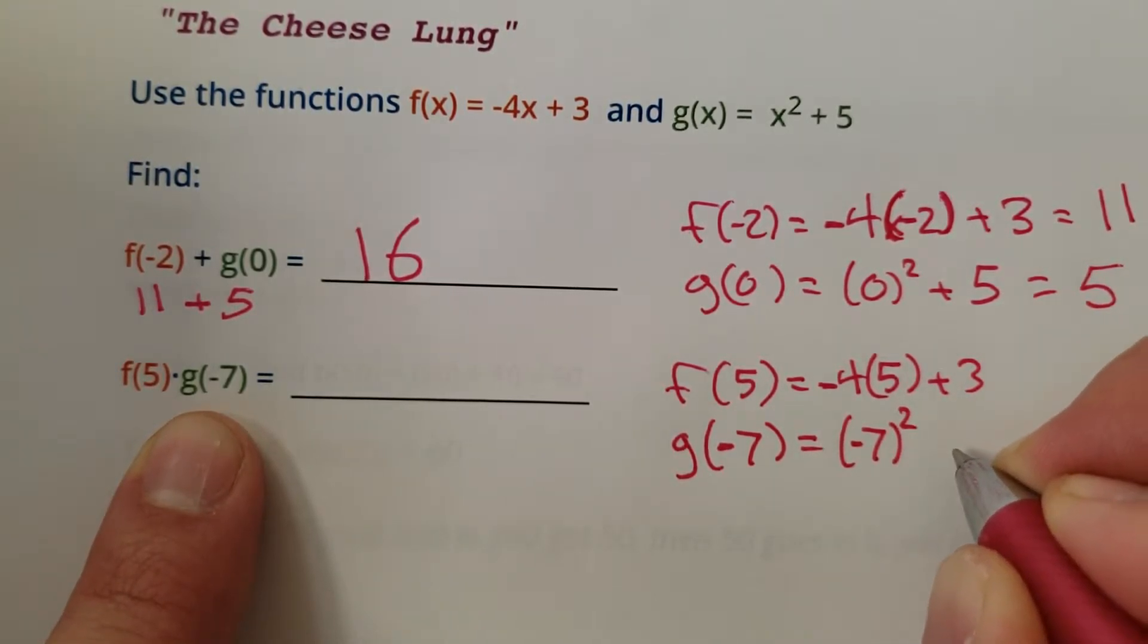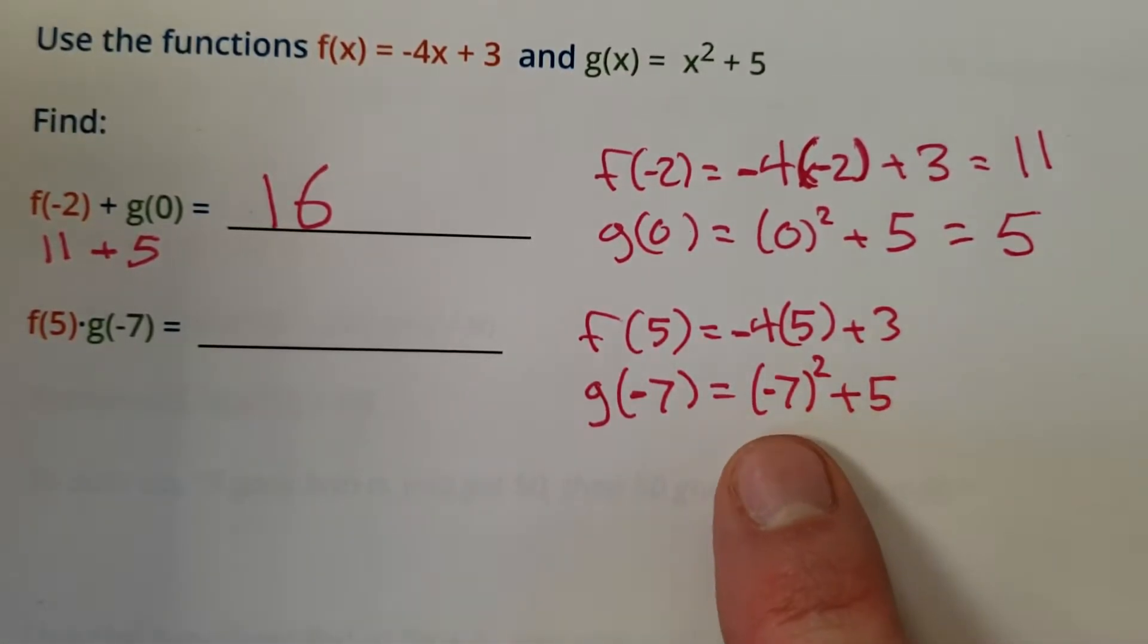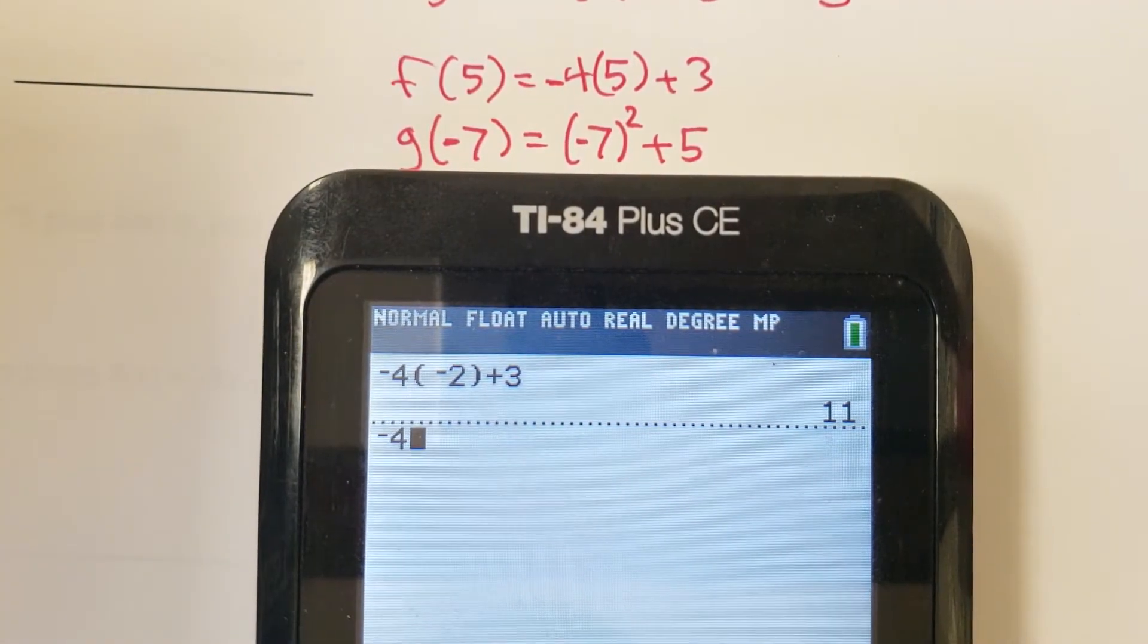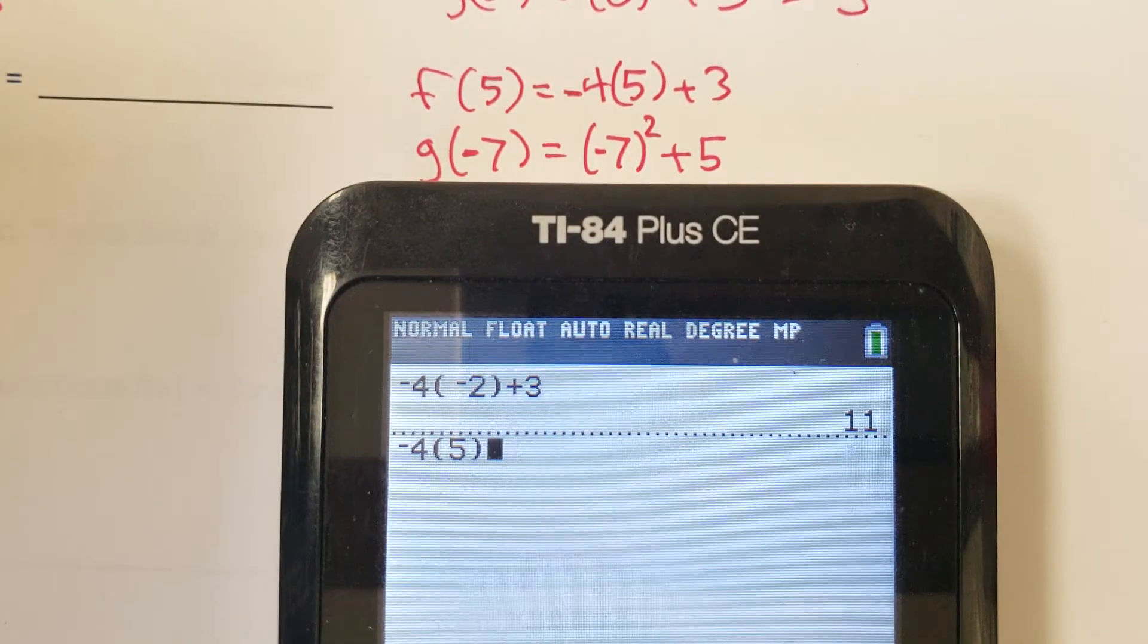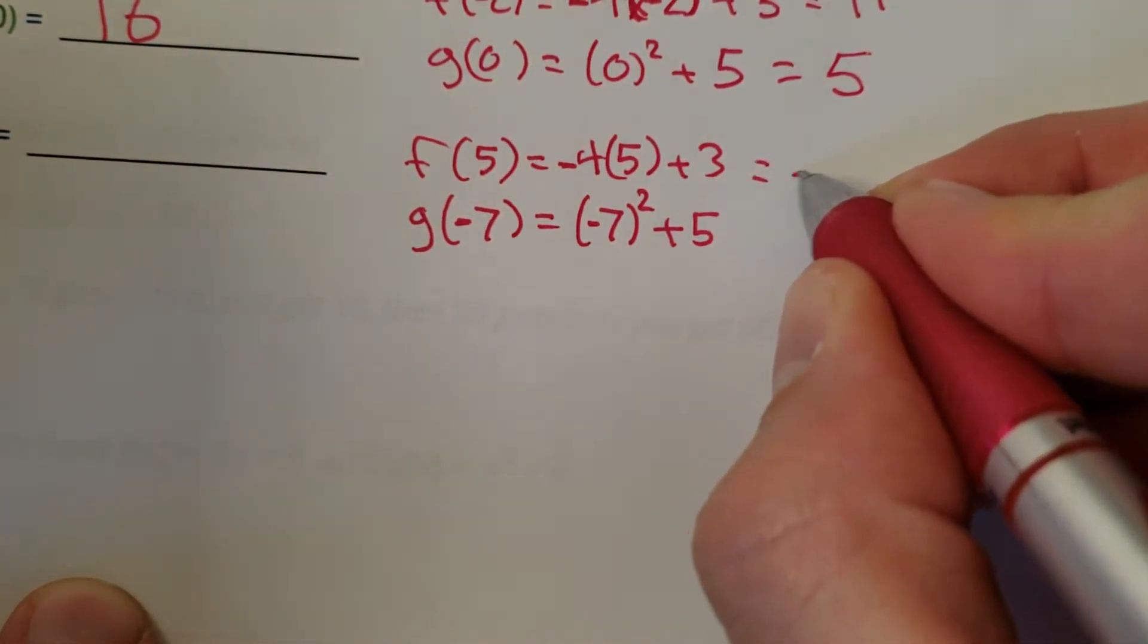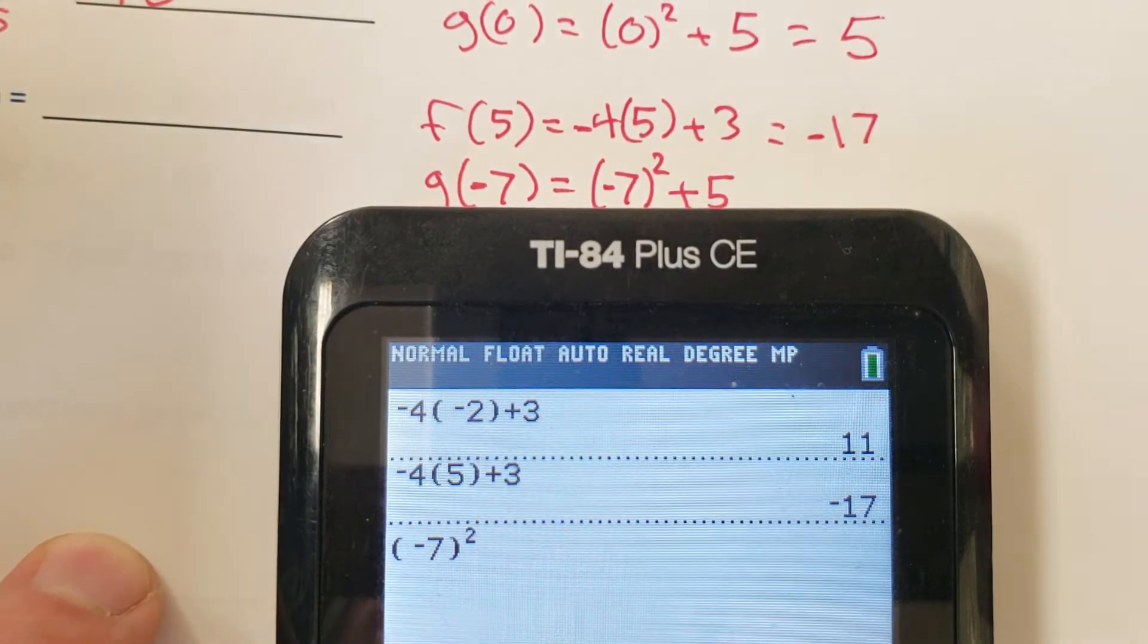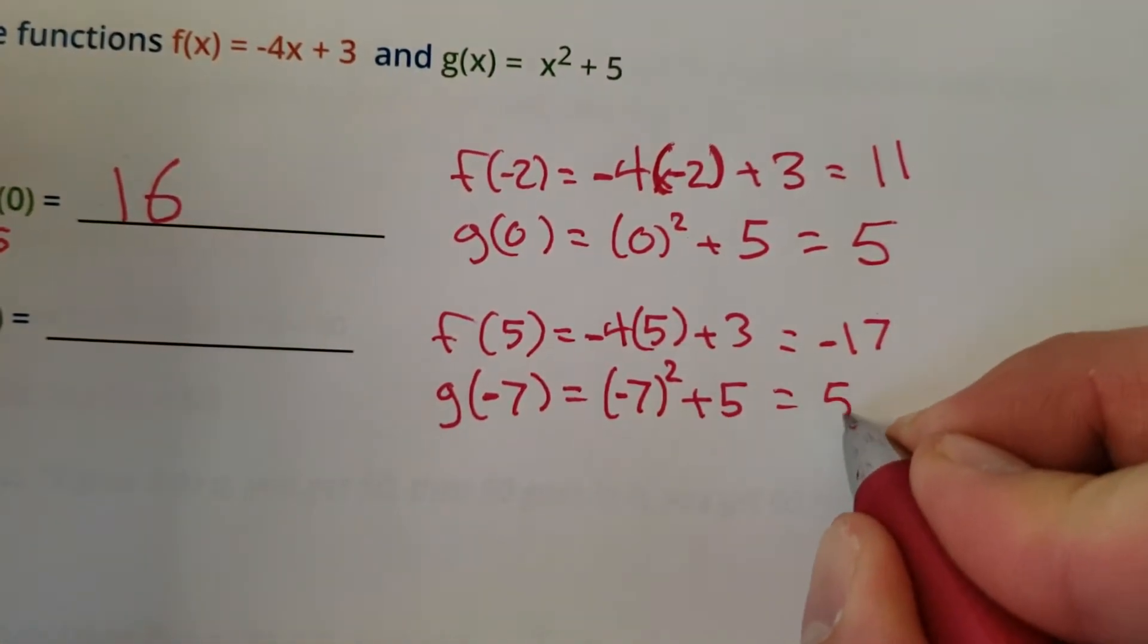Negative 7 squared. I guarantee you the number one mistake people are going to make over and over again is when you square a negative you must use brackets. That's why I just always use brackets even with the simple ones to make sure I don't make a simple mistake. It takes a split extra second of effort to use brackets, and that split extra second will help you make fewer mistakes. So invest that short amount of time to make sure you do it right. Bracket negative 7 squared. What was it again? It was plus 5. There we go. 54.